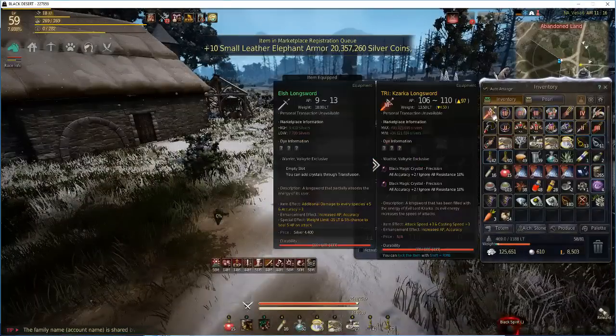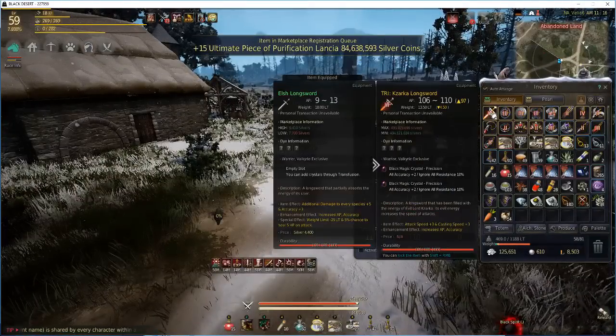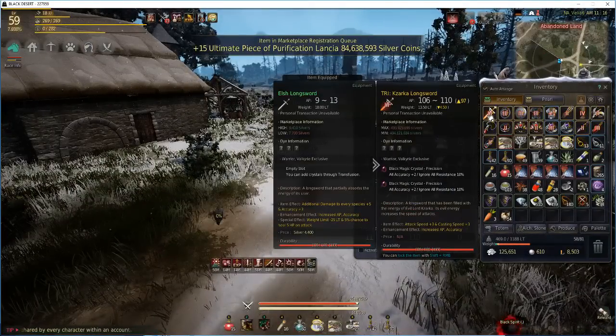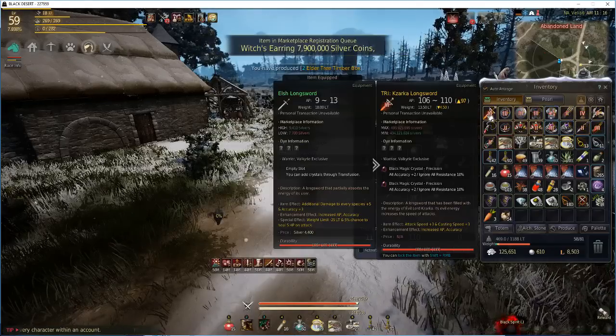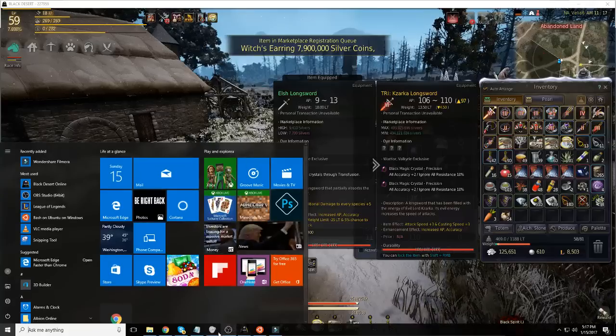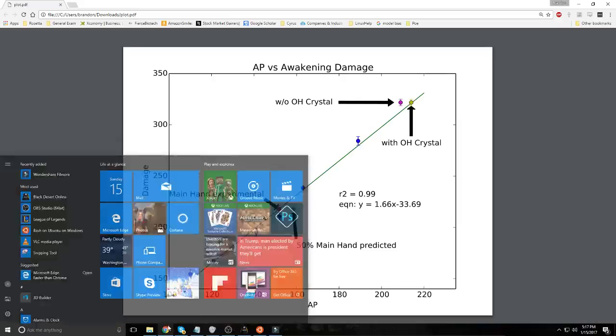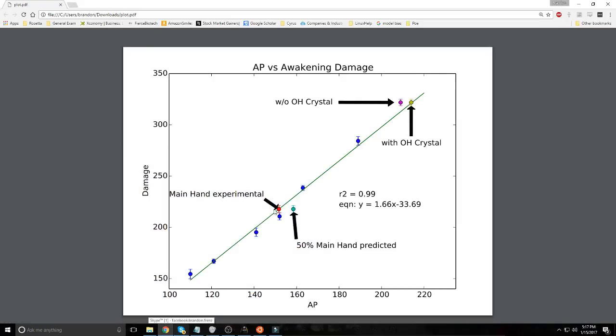The Elsh Sword has about 11.5, and Kazarka has about 58. So the damage we would expect it to be about a 48 AP increase. What we actually see looking at our graph is about a 41 AP increase.